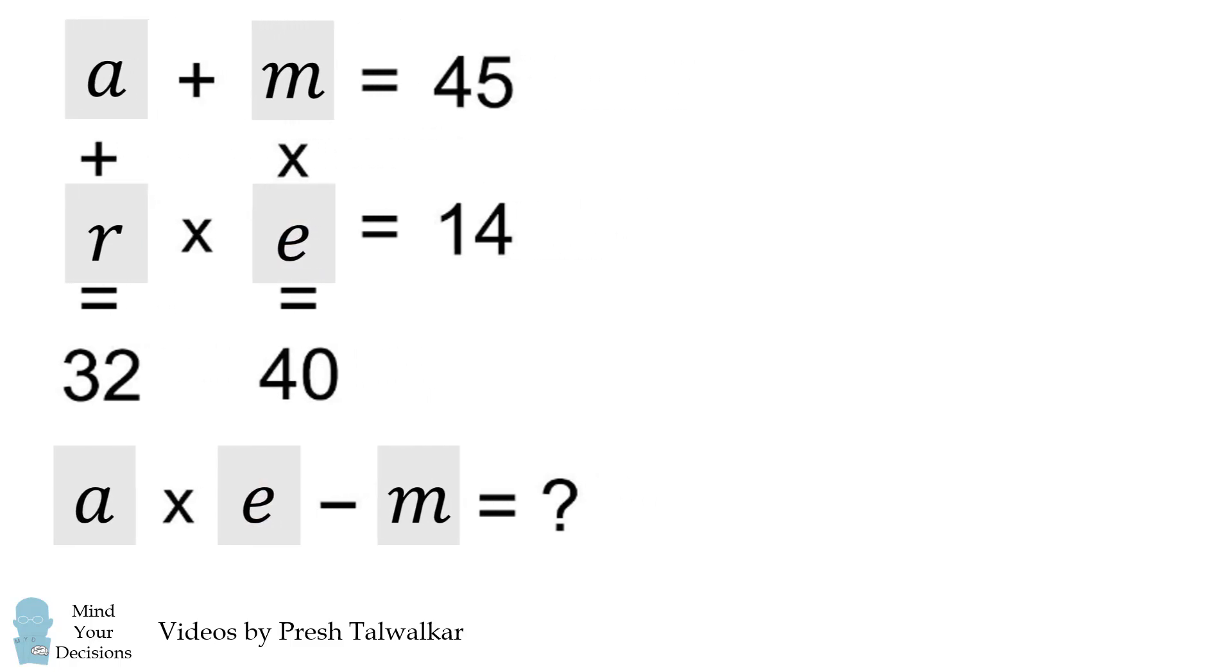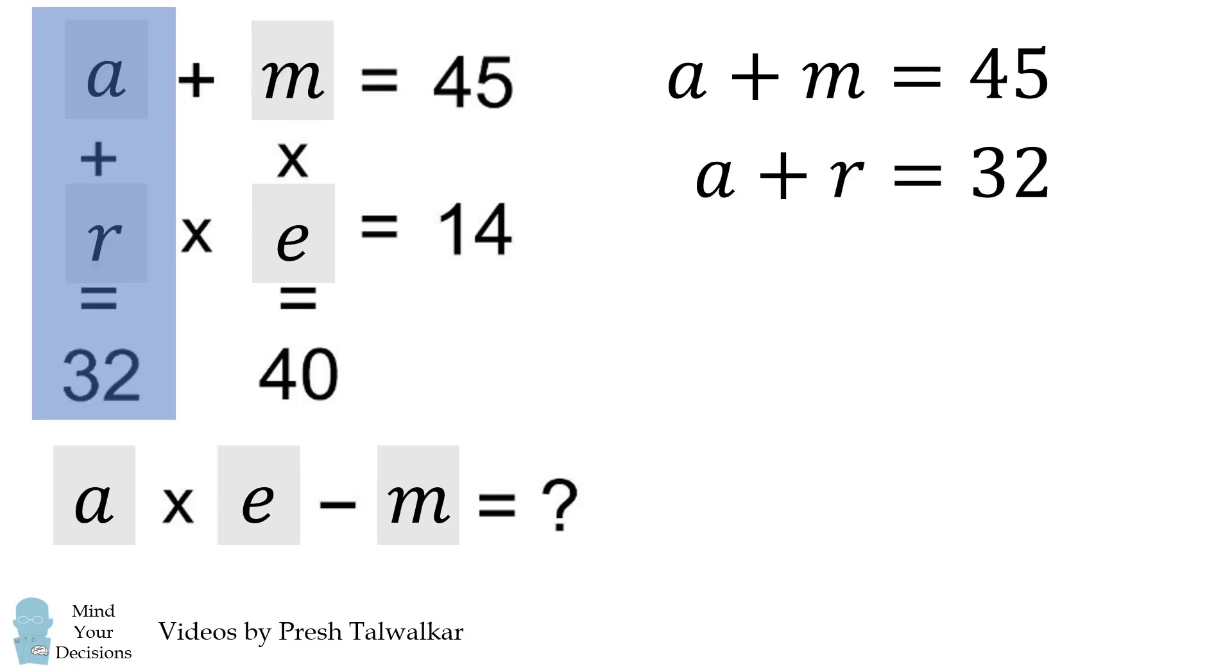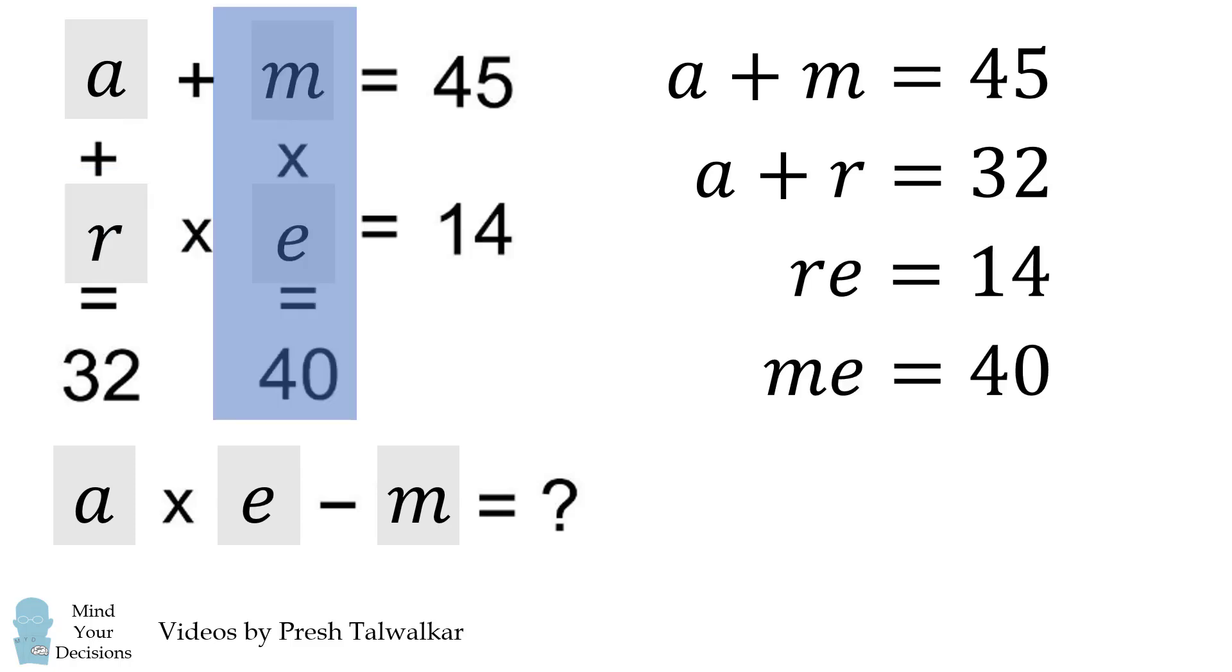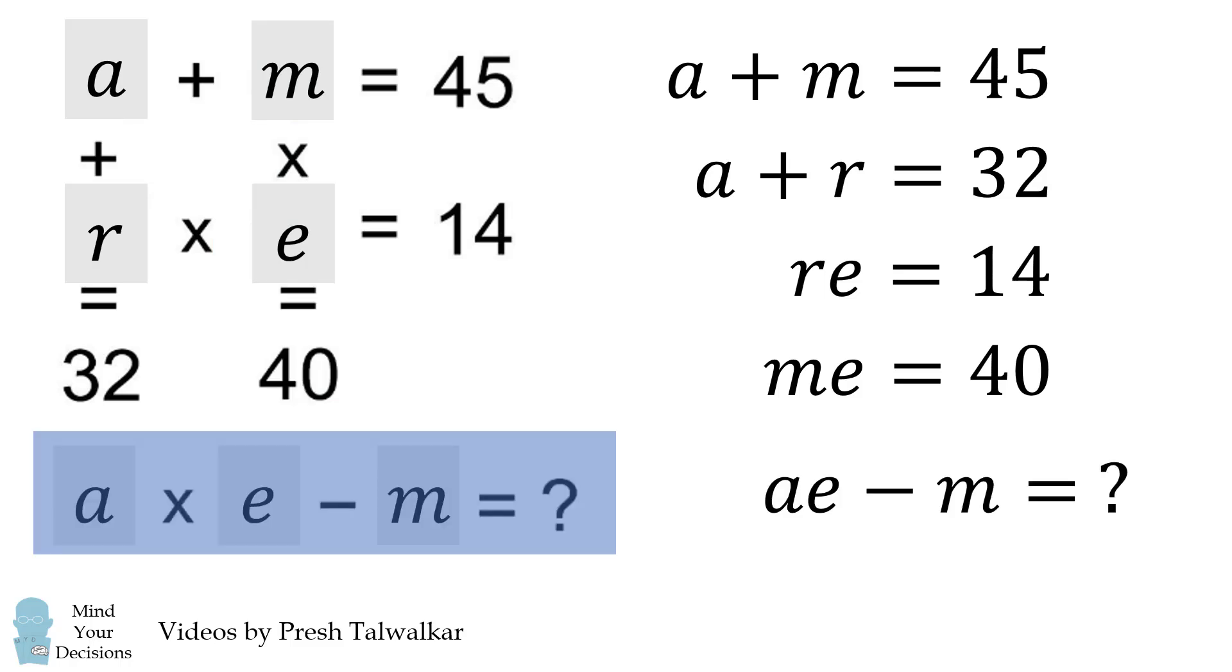We now convert this puzzle into math equations. The first line states that a plus m is equal to 45. We then have a plus r is equal to 32, r times e is equal to 14, and m times e is equal to 40. We want to solve for a times e minus m.